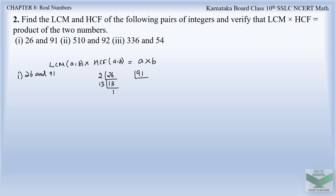Now let us take 91. Since it is an odd number, let us try with 3 — it is not divisible by 3, and not by 5 either. So let us try 7: 7 × 13 = 91. So writing down the prime factors in product form: 26 = 2 × 13, and 91 = 7 × 13.